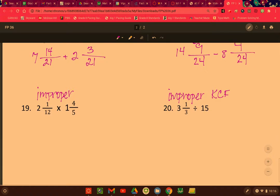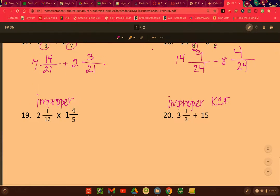So making this improper is going to make your life a lot easier. It's not the only way to do it. 12 times 2 is 24, plus 1 is 25 over 12. And 5 times 1. So I should be clear what I'm doing here. Multiply those.